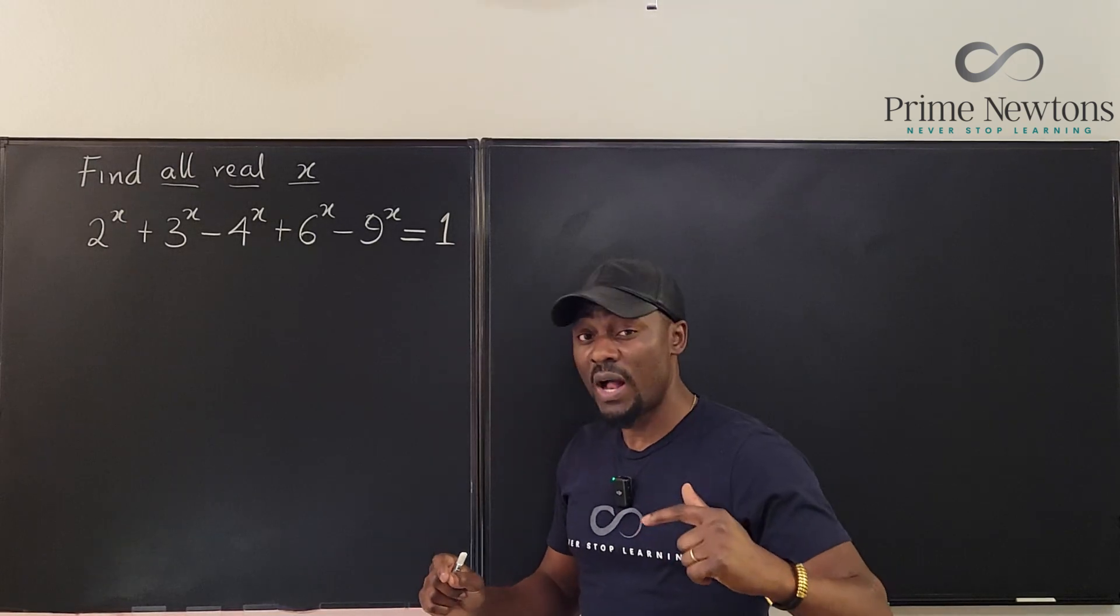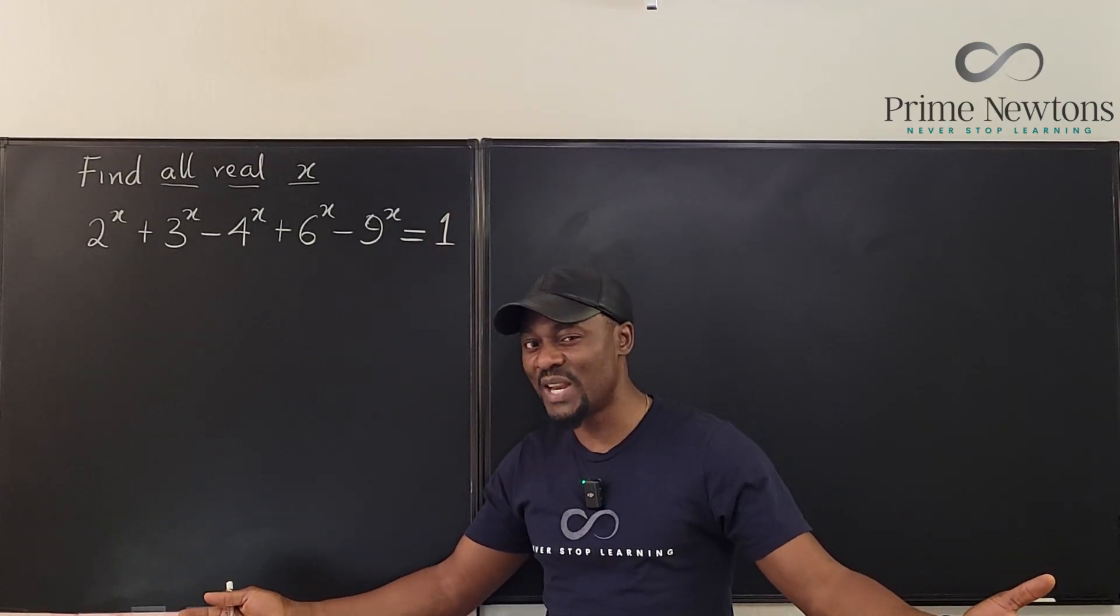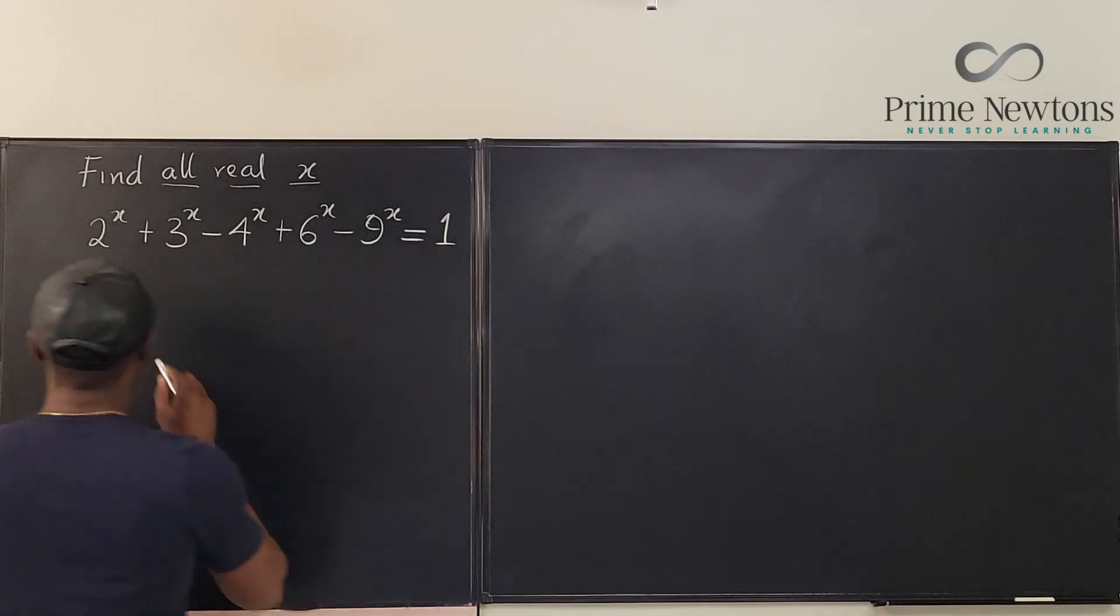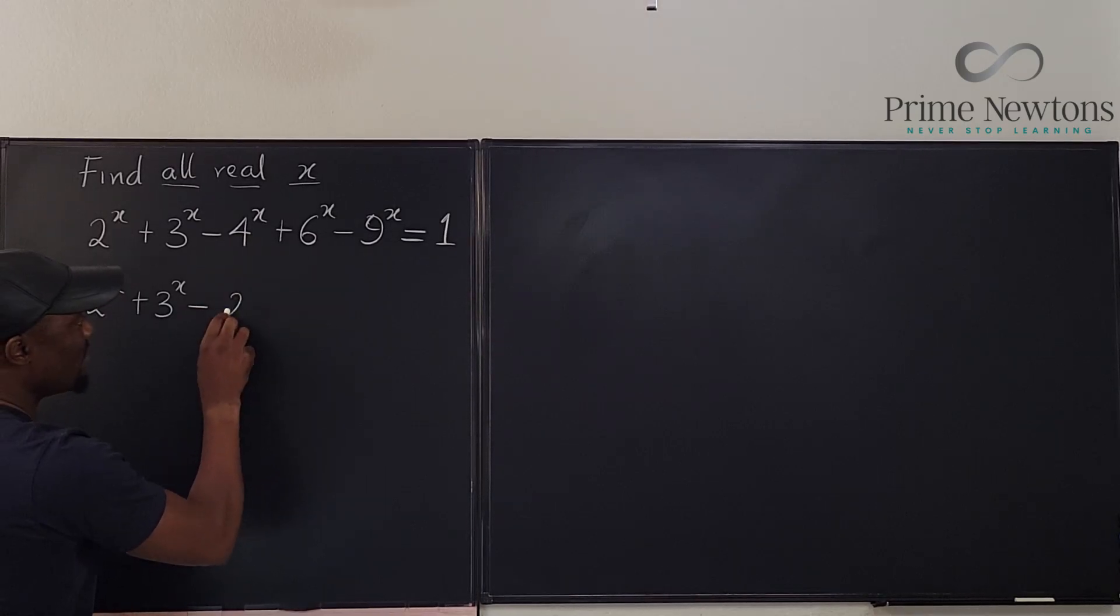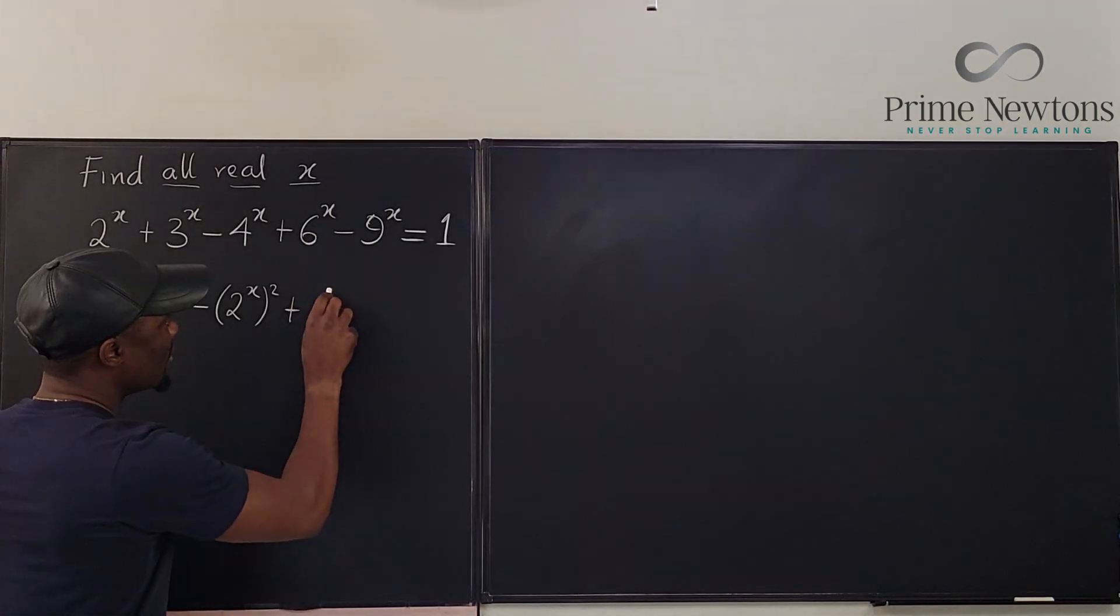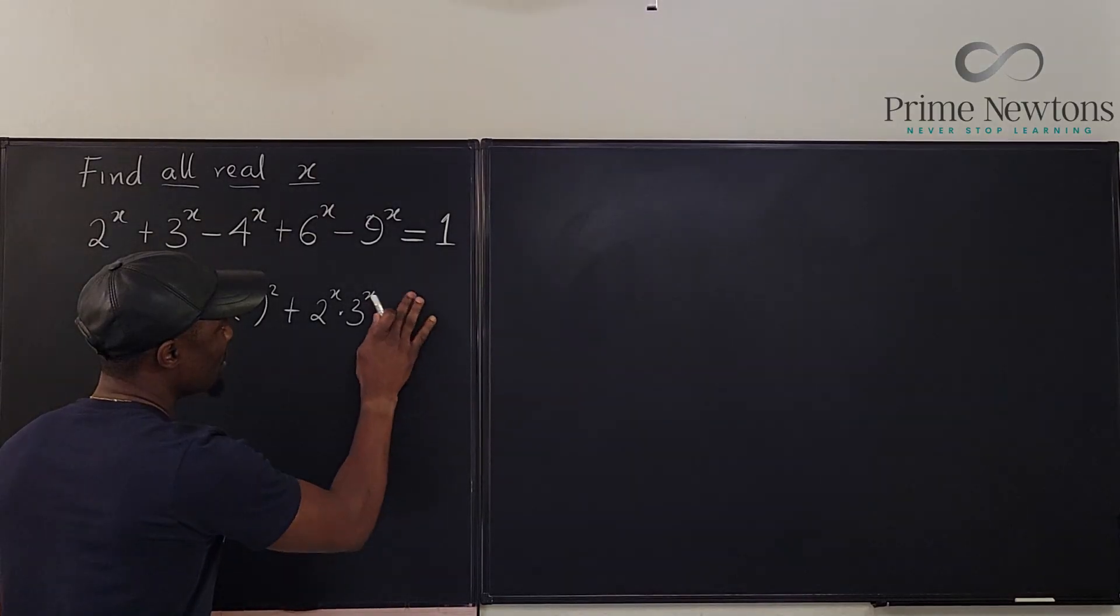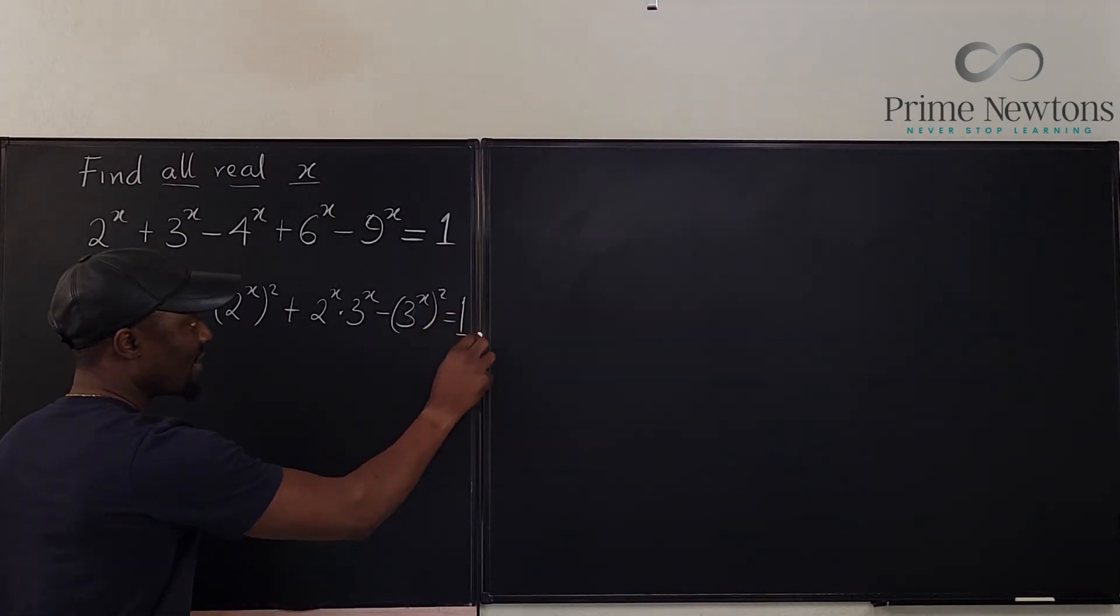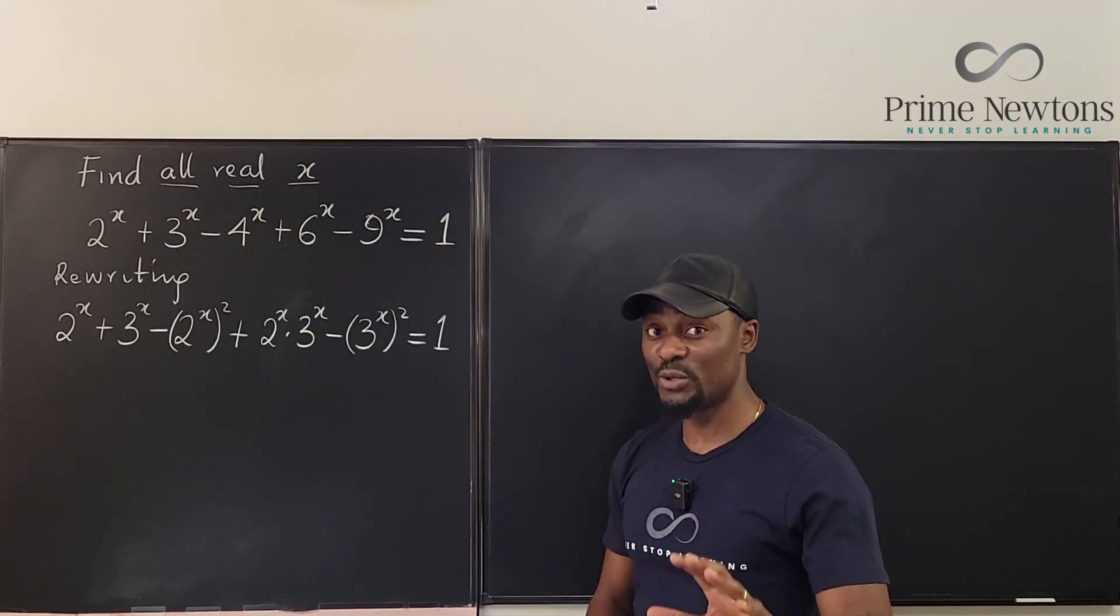After observing this problem, you'll notice that everything on the board contains 2 or 3. What if we rewrite all these numbers in terms of 2 and 3? This is 2^x + 3^x minus 4 which is 2^2, so it's (2^x)^2. Then 6^x is 2^x times 3^x, minus 9^x which is (3^x)^2. This is tight, equals 1. I'll rewrite it and everything is now written in terms of 2 and 3.